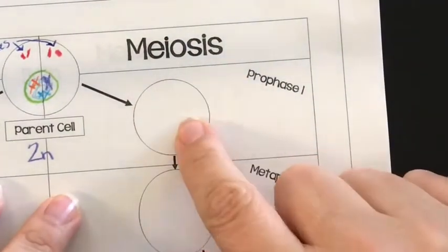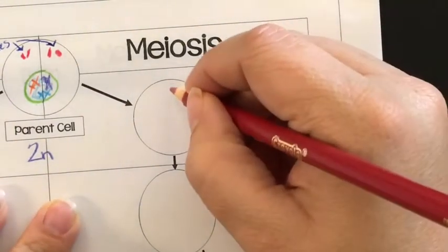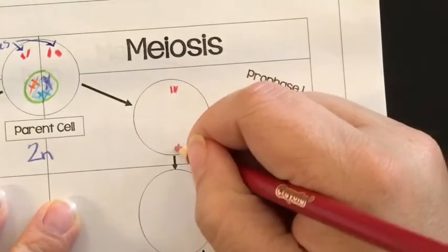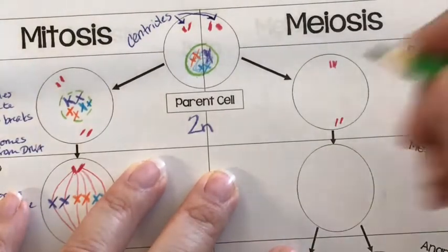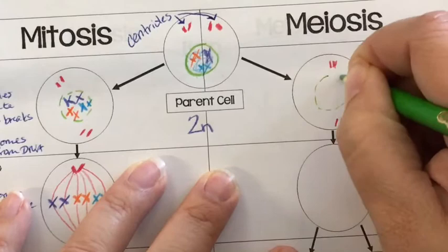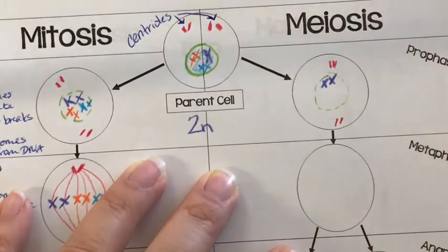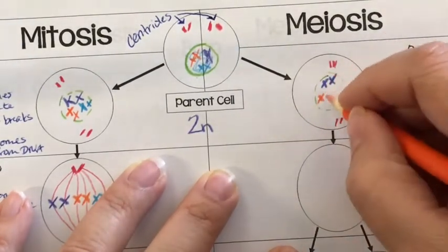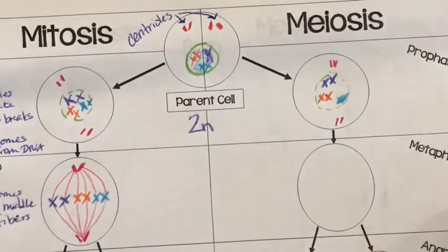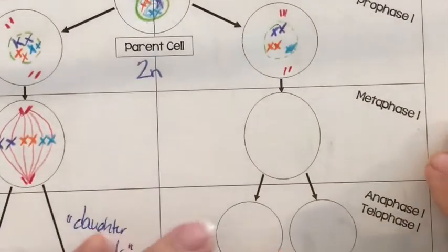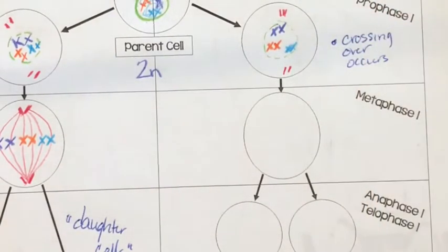In meiosis, you've got prophase 1. So it's going to look pretty similar to our prophase and mitosis. You're going to have your centrioles migrating to either side of the cell. But this time, there's a little weirdness that's going to happen. So inside our nucleus, our little chromatids are going to line up side-by-side with one another. They're going to be super close to their little buddies. Now the reason they're doing this is because they're actually going to do a little freaky DNA swap. It's pretty cool. It's called crossing over. So we'll put a little note here, crossing over. Crossing over occurs.